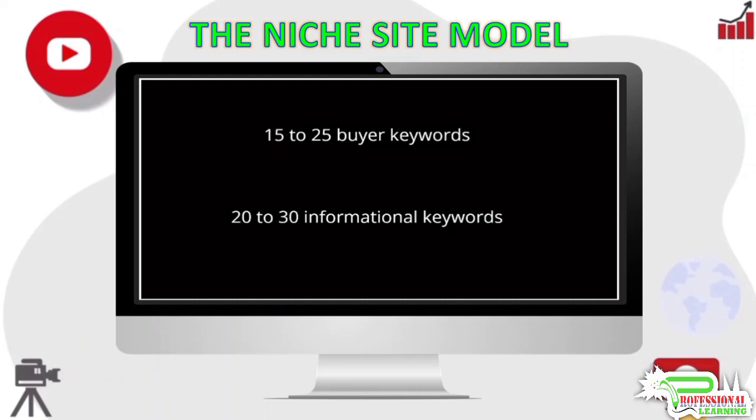For any site, you would want at least 15 to 25 buyer keywords and around 20 to 30 informational keywords. That said, there is no upper limit on the number of keywords in each category.